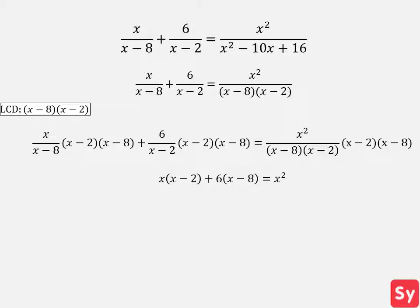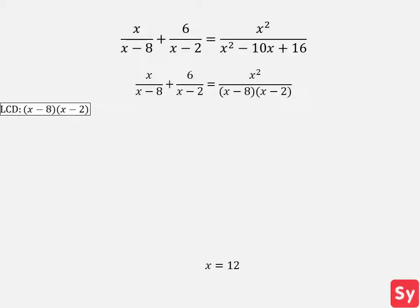We simplify this again and get x squared minus 2x plus 6x minus 48 equals x squared. We simplify one more time and move x squared over to the other side. Now we get 4x minus 48 equals 0. We solve for x and get x equals 12. Now we plug 12 into the LCD to make sure it is not extraneous — it equals 40, so this is our solution.